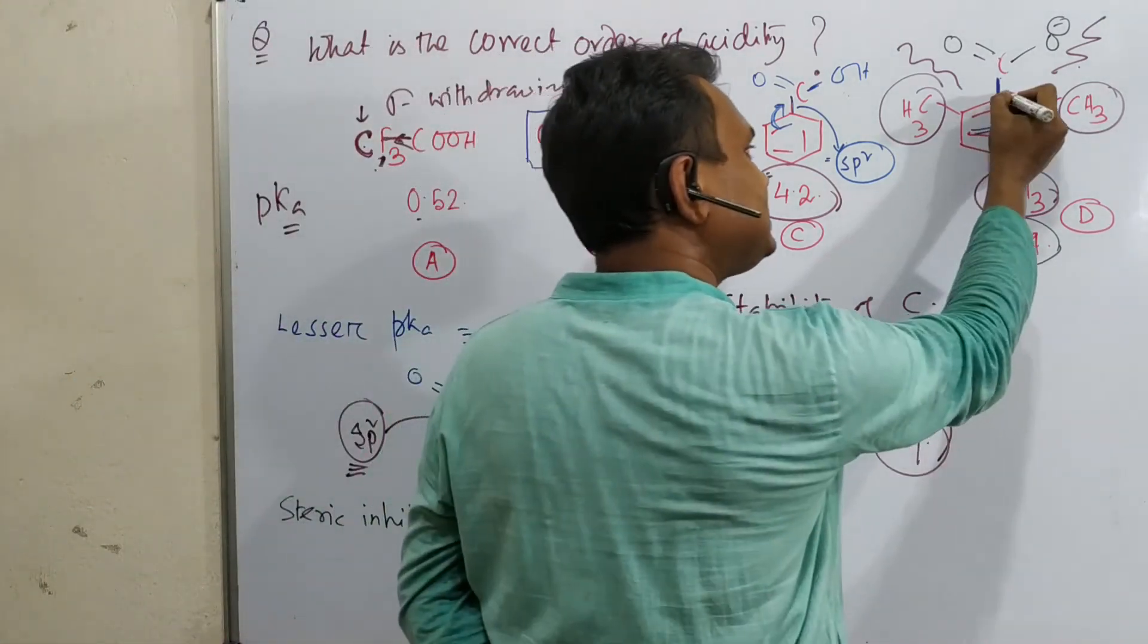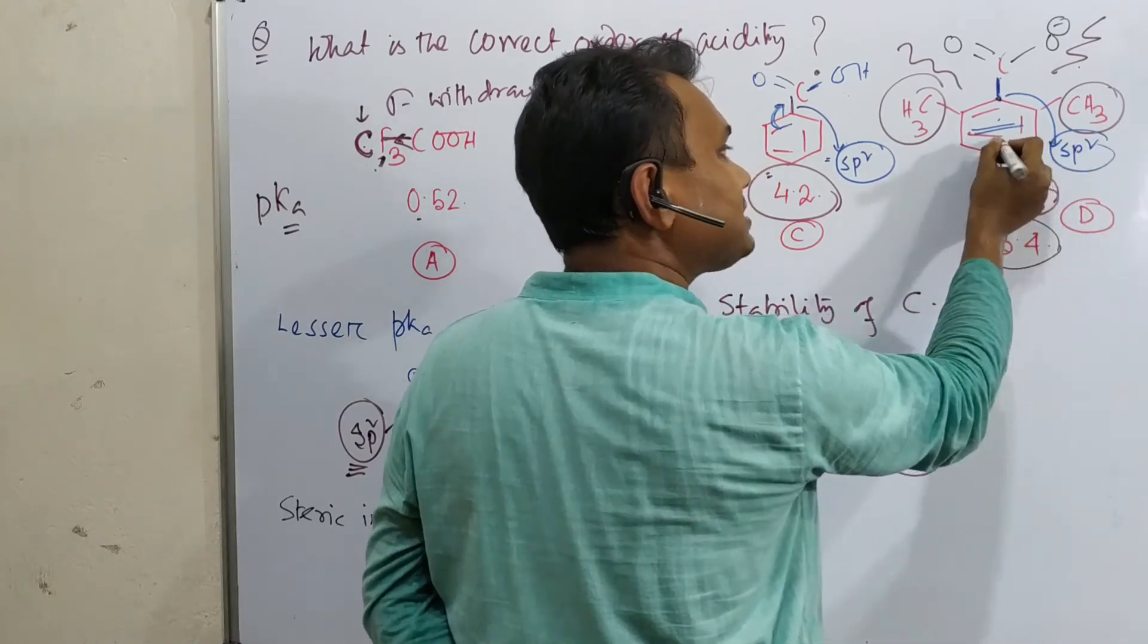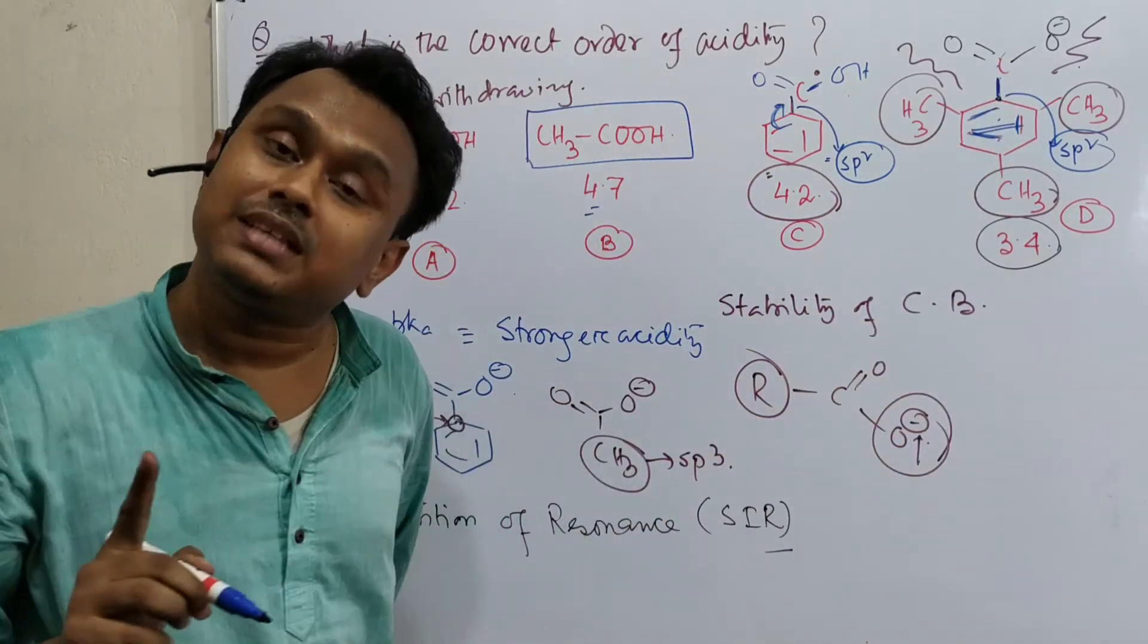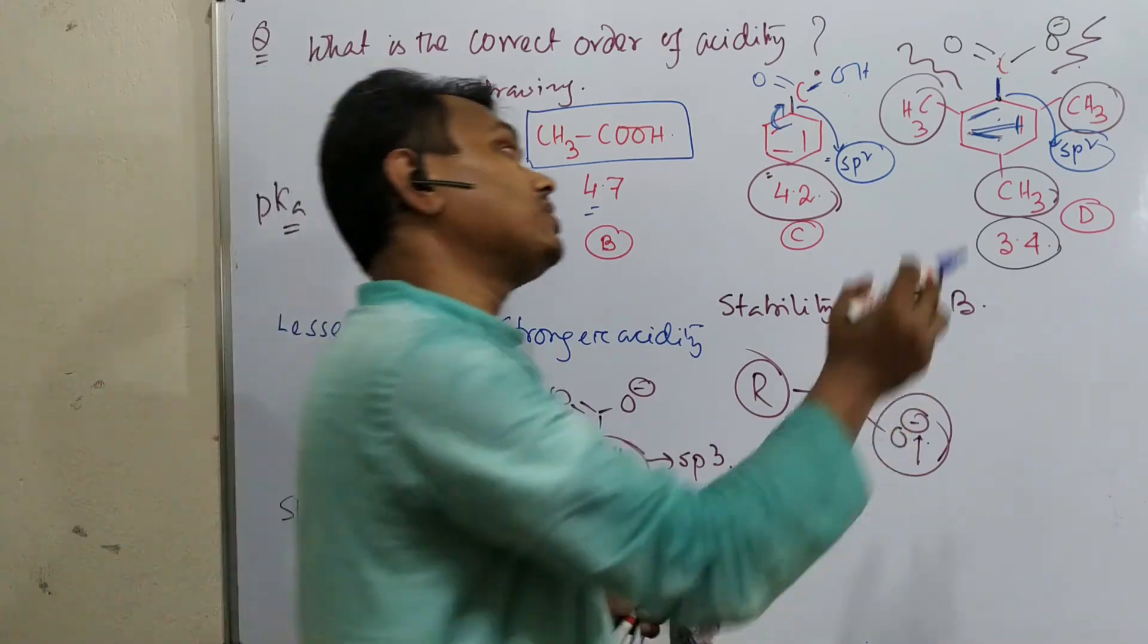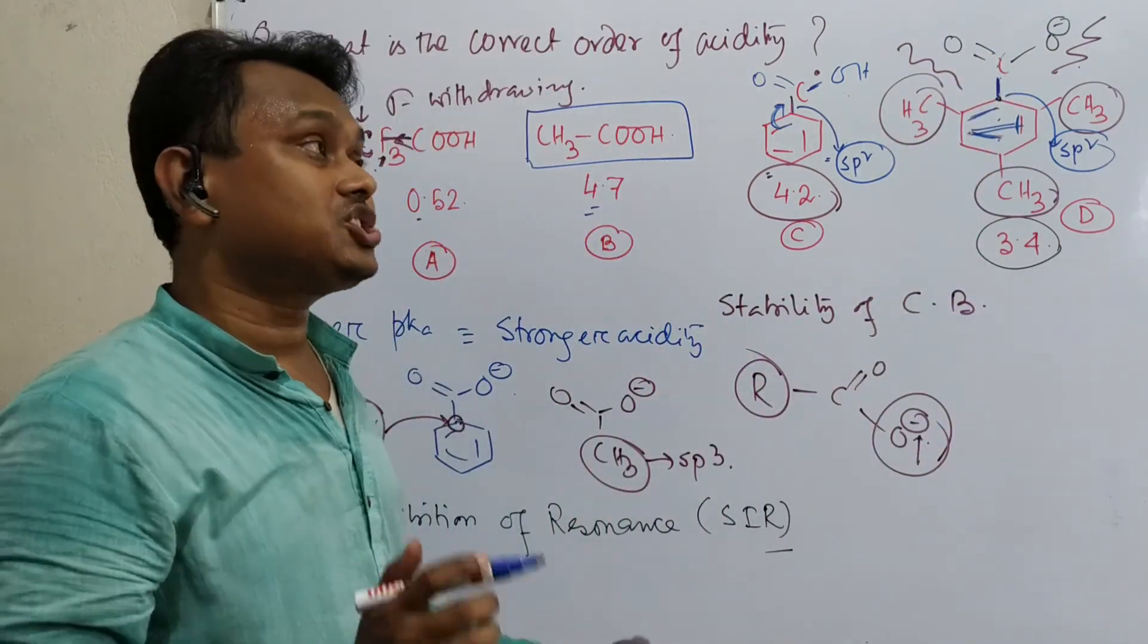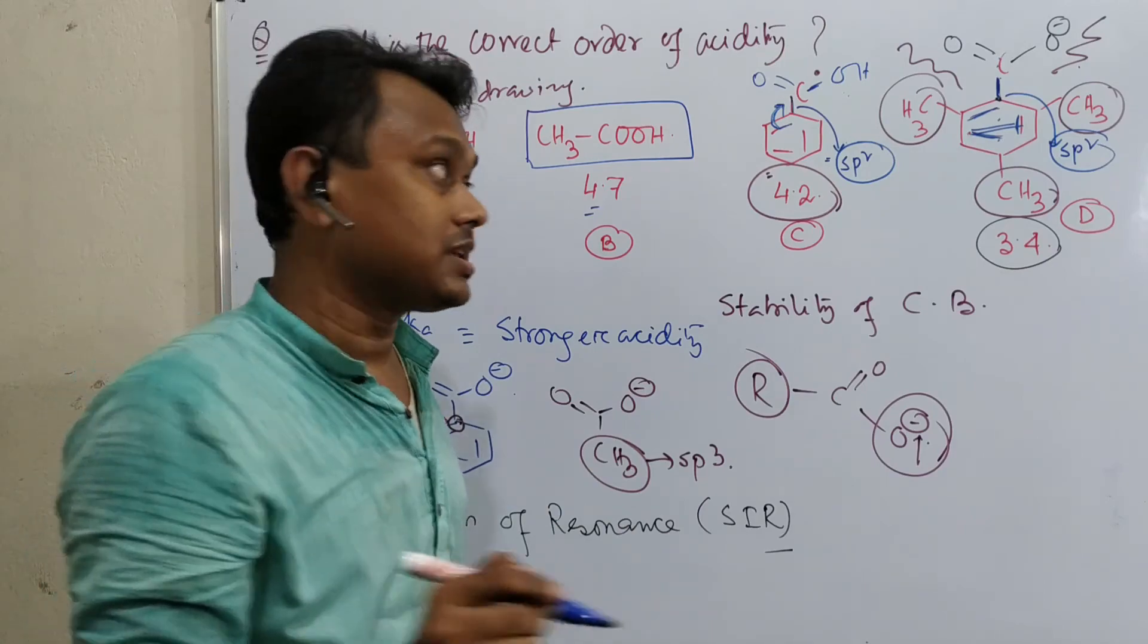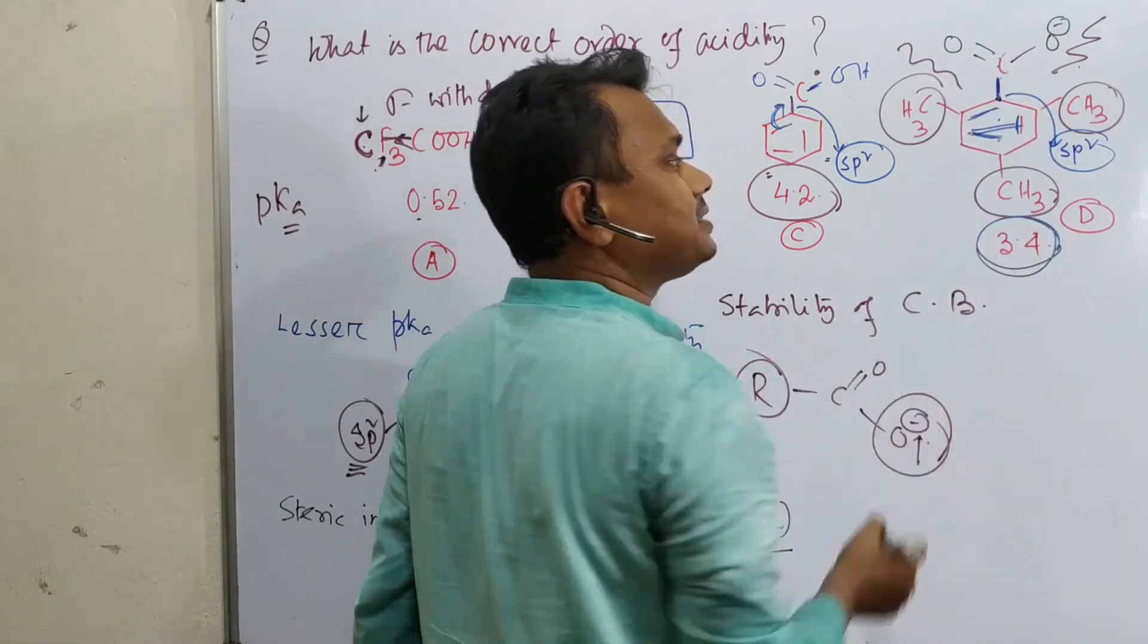But in this mesitoic acid case, this carboxyl is taking because SP2, but no one is giving. Because in order to give this pi electron cloud to this carbon, they need to come in the same plane because out of planarity hampers the electron delocalization or resonance. So this is actually steric inhibition of resonance. Why? Because the steric repulsion is inhibiting or prohibiting the resonance. That's why the pKa is higher.